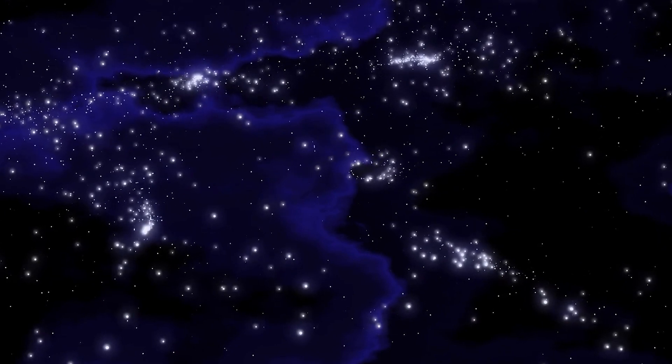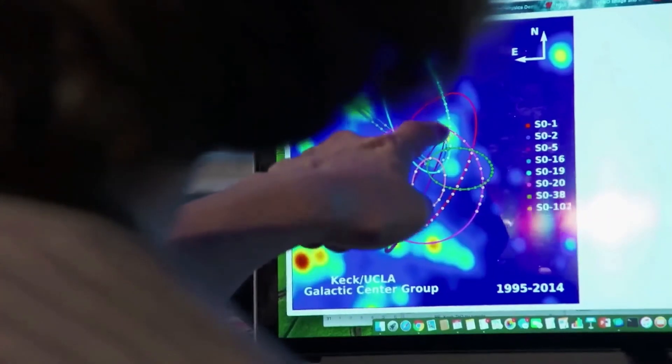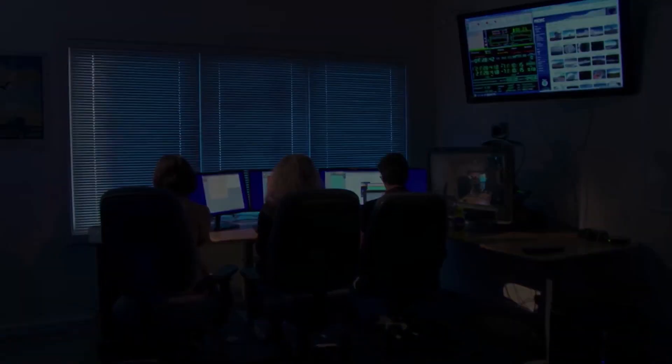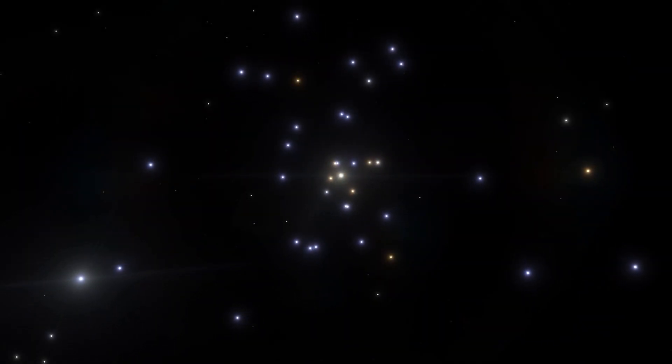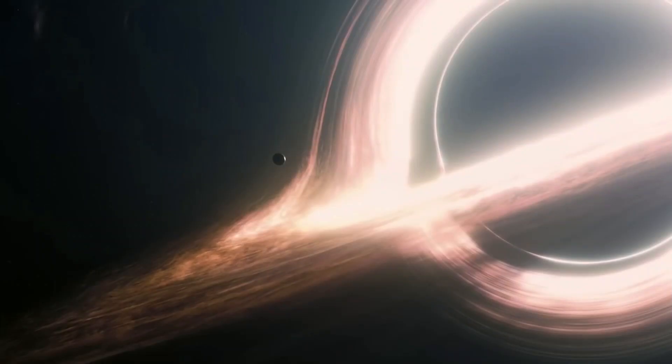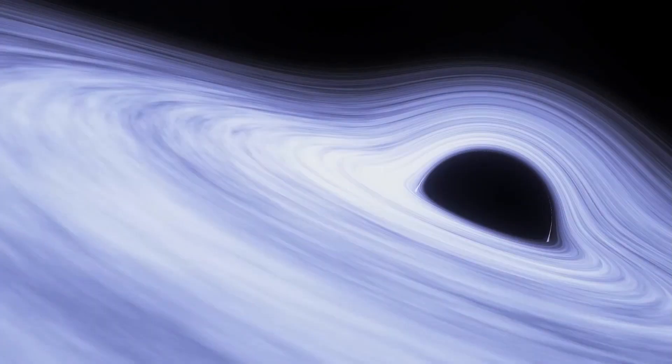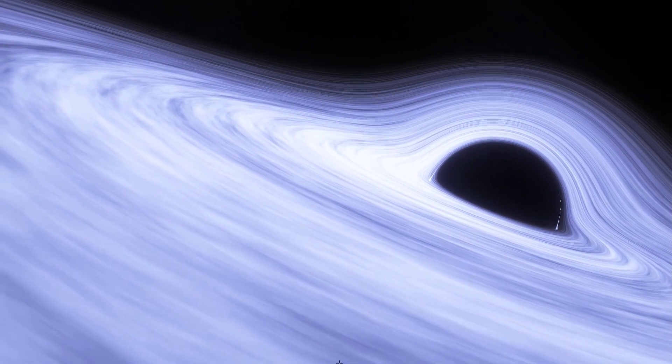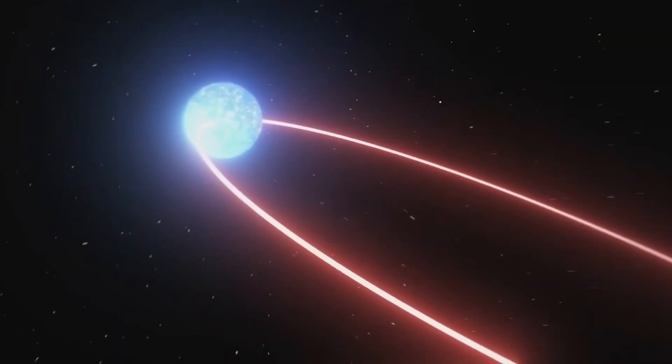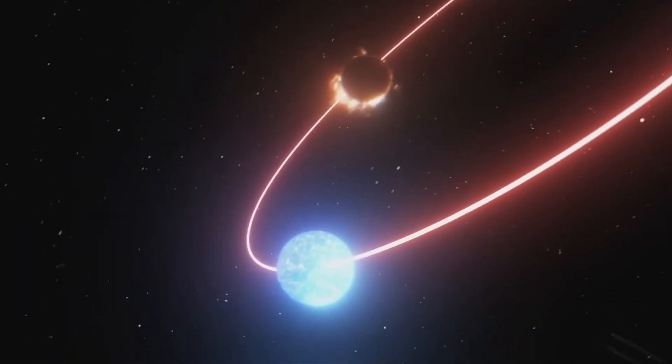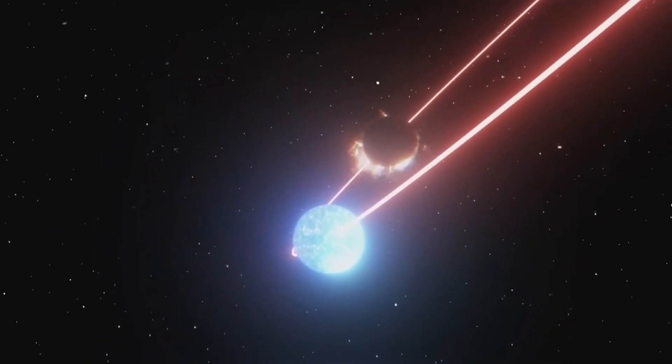Despite M4 being the closest globular cluster, it remains impossible to resolve individual stars in its densely packed core. But there is a clever way to solve this problem. Although we cannot directly observe what is happening at the center of the cluster, it is possible to estimate the distribution of central mass in such clusters by studying the motion of high-speed stars.